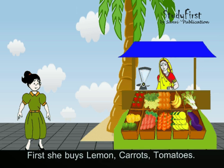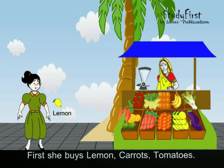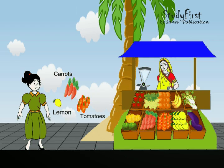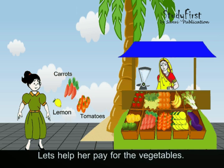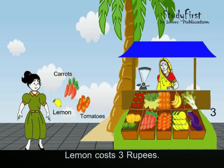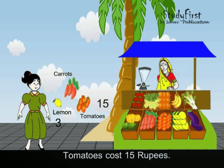First, she buys lemon, carrot, and tomatoes. How much will she have to pay for them? Let's help her pay for the vegetables. Lemon costs 3 rupees, tomatoes cost 15 rupees, and carrots cost 7 rupees.